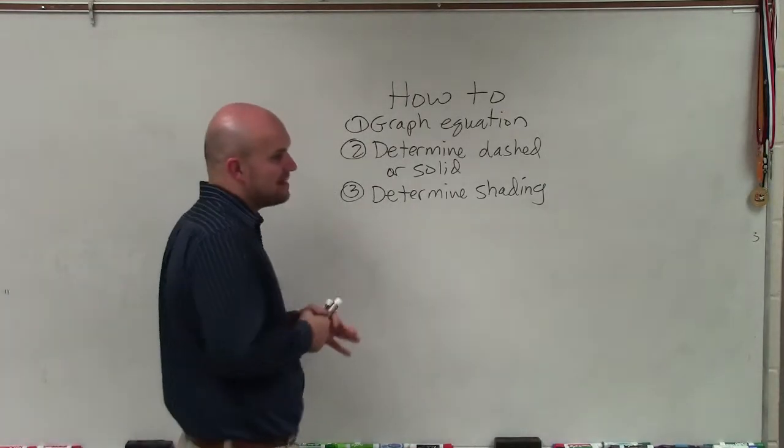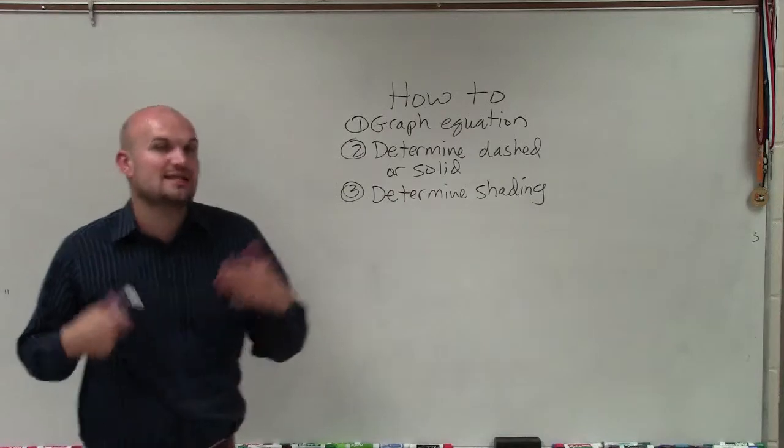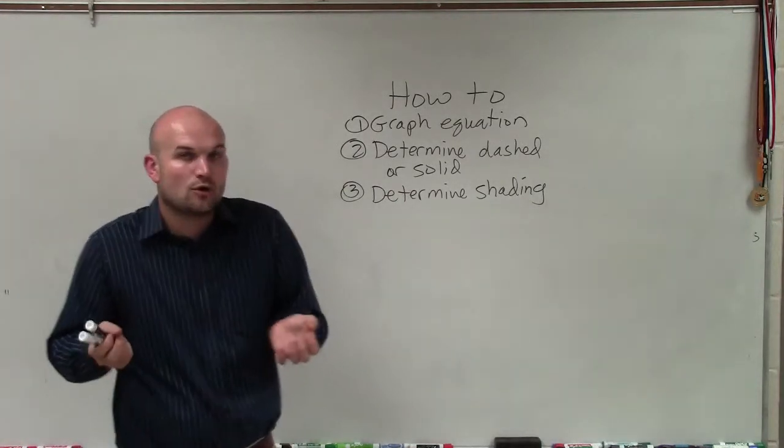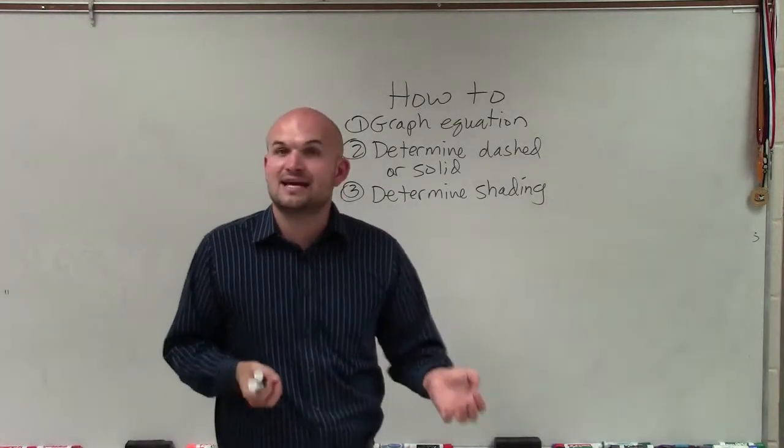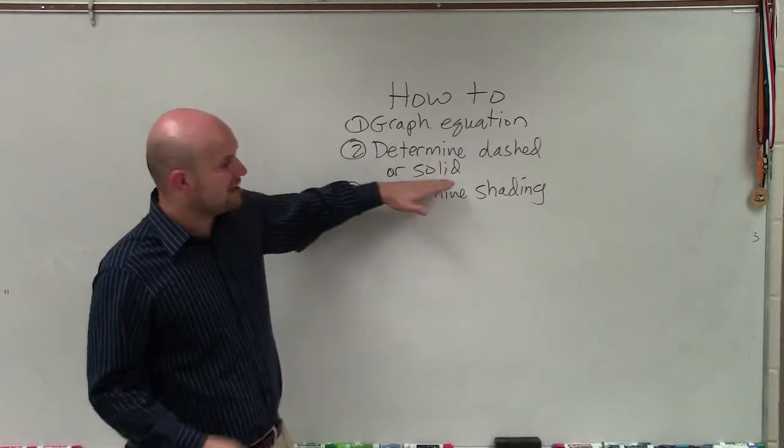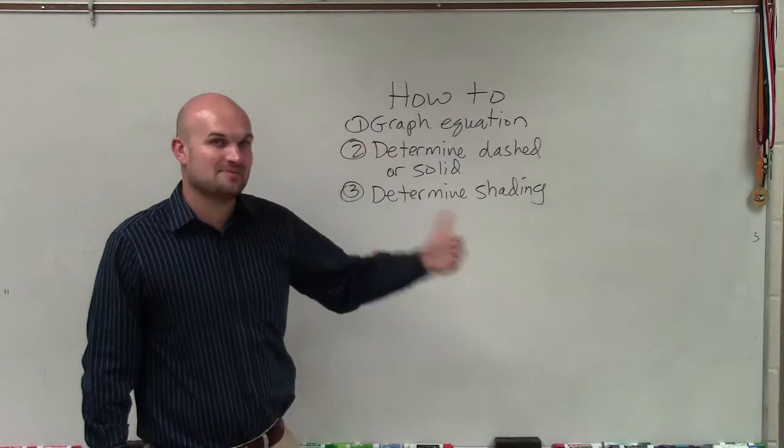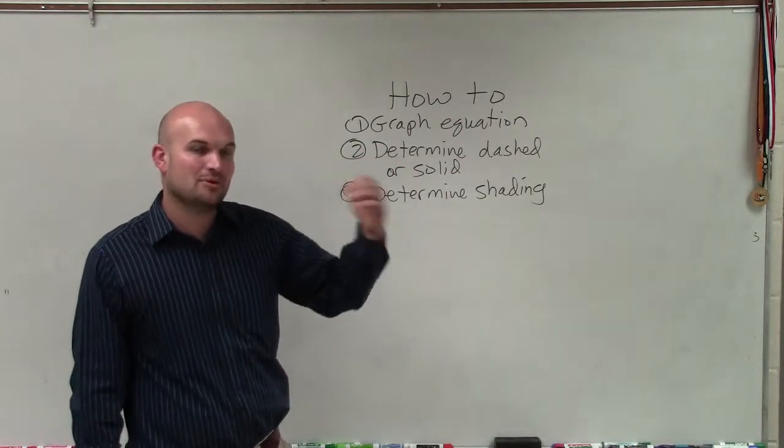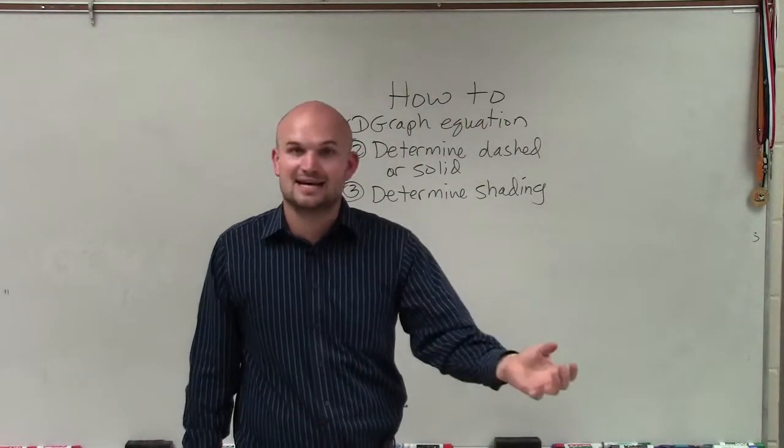If it's dashed, that means any point that makes up that dashed line is not going to be part of our solution. If you plug in the x and y coordinates of a point on that dashed line, it will not make the inequality true. However, if our graph is solid, then it's the exact opposite. It is part of our solution, and any point on the solid line will make your inequality true.